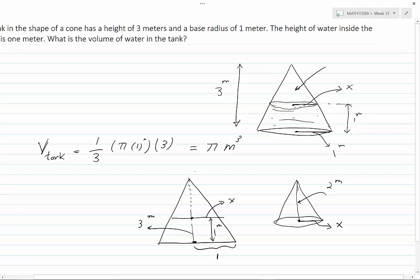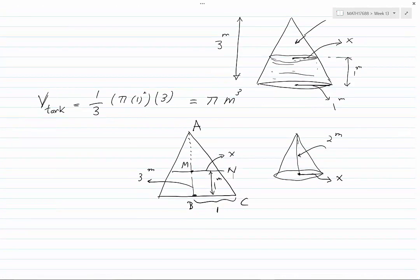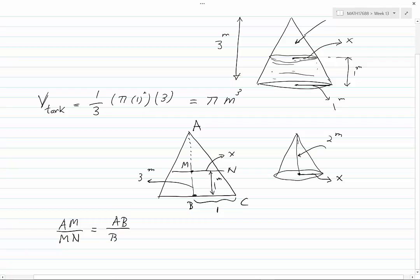Let's name these corners A, B, C, and M. Based on properties of similar triangles, we know that AM divided by MN is equal to AB divided by BC.